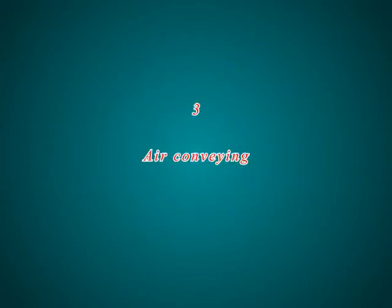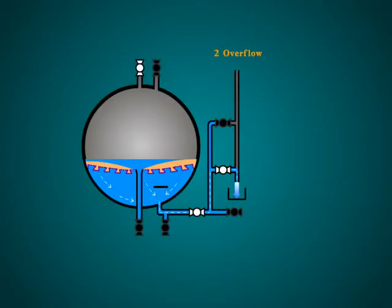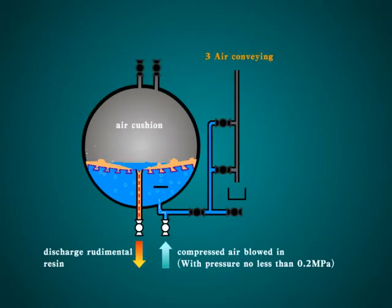Step 3: The compressed air is blown into the mixed bed. The air pressure upward washes and conveys out the remaining resin on the porous sheet.